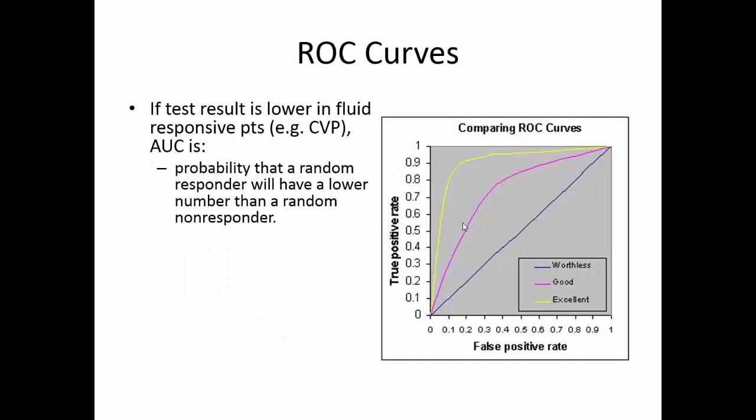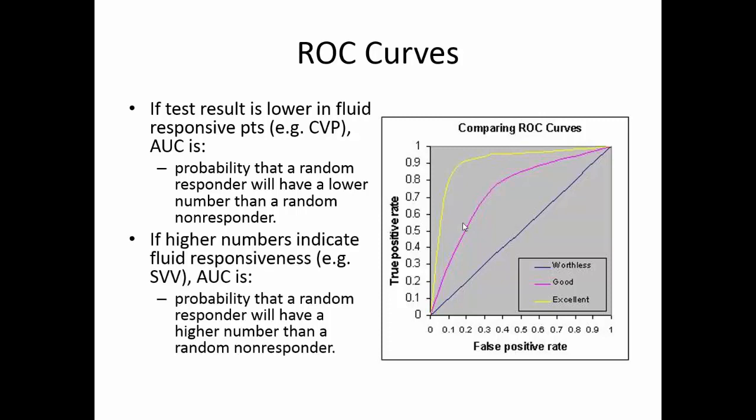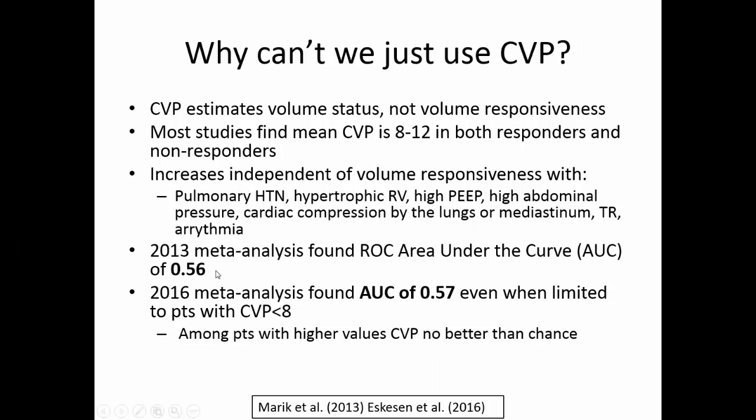I need to explain area under the curve because it will come up throughout. For a test where low values indicate fluid responsiveness, AUC is the percent chance that a fluid responder will have a lower value than a non-responder. For tests where fluid responders have higher values — such as stroke volume variation — AUC is the chance that a fluid responder will have a higher value than a non-responder. You can't have an AUC below 50% — that's chance. So CVP at 0.56 or 0.57 is basically a coin flip.